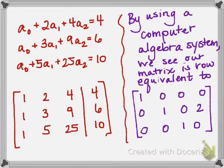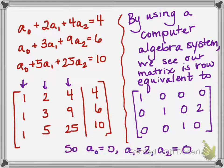Now our job is to interpret what this means. Remembering that the first column represented the coefficient of a0, the second column represented the coefficients of a1, and the third column represented the coefficients of a2, this tells us that a0 = 0, a1 = 2, and a2 = 0.